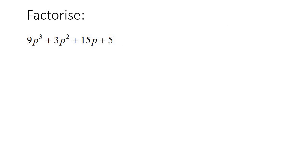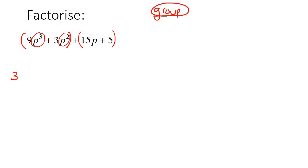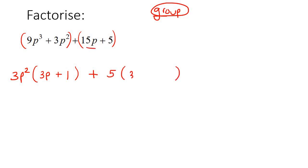So here's our first example. You realize that there are four terms. Is there a common factor? Well no, there's nothing you could take out of all four of those, so we're going to use grouping. What does grouping mean? Well, the word group means to put stuff in groups. Put the first two in a group in a bracket, and then put the second two in a group. Then factorize that first group — there's a common factor of 3, and this one has p³ and this one has p², so you could take out a p². You'd be left with 3p plus 1. For the next group, you could take out a 5, and you'd be left with 3p plus 1.